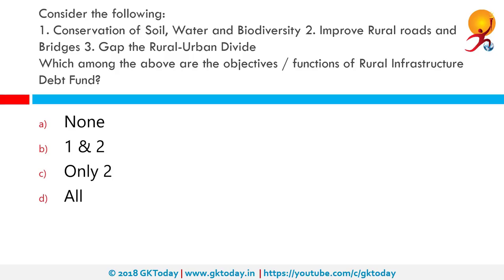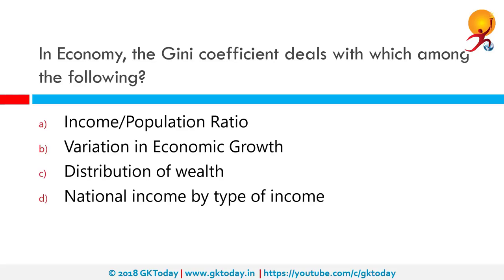Consider the following: 1. conservation of soil, water and biodiversity; 2. improve rural roads and bridges; 3. bridge the rural-urban divide. Which among the following are the objectives or functions of the Rural Infrastructure Debt Fund? All of these are functions of this particular fund.